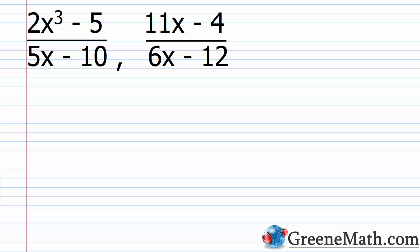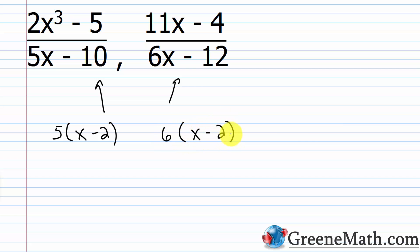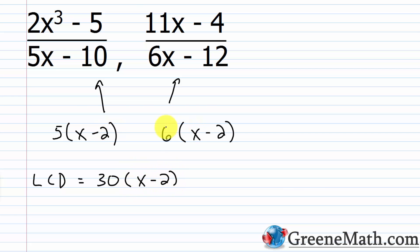Another example: (2x³−5)/(5x−10) and (11x−4)/(6x−12). Factor the denominators: 5x−10 = 5(x−2) and 6x−12 = 6(x−2). The factor x−2 appears once in each — one factor goes in. For the coefficients: 5 is prime and 6 = 2 × 3, no overlap, so 5 × 6 = 30. The LCD is 30(x−2), left in factored form.